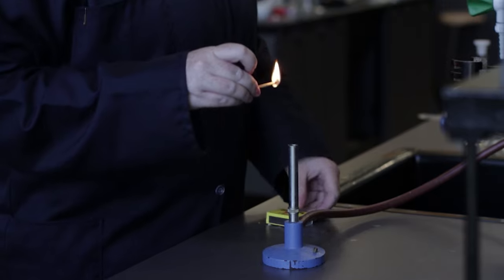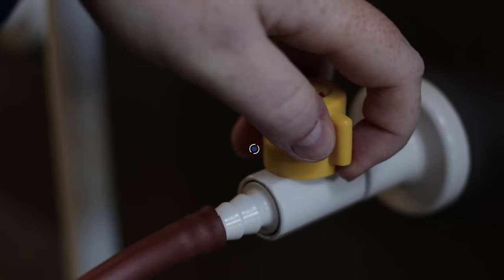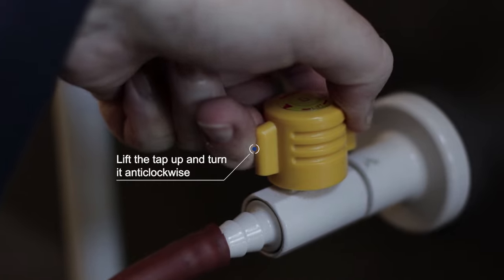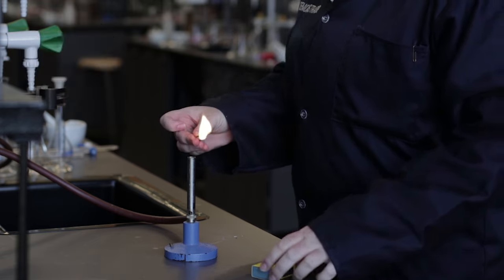Light your match and hold it over the barrel as you slowly open the gas tap by lifting up the tap and turning the tap anti-clockwise. Do not cross your arms when doing this process.